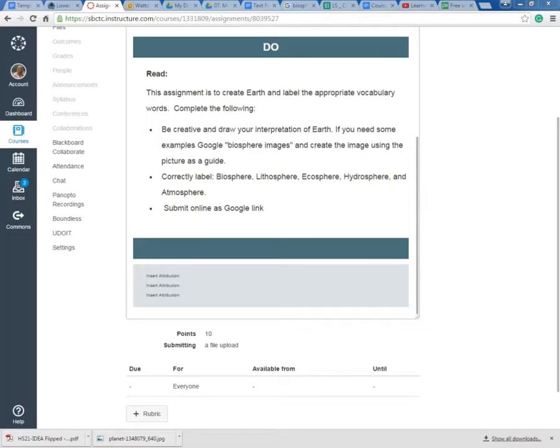I don't know about you, but sometimes when I'm asked to be creative, I need some ideas. I was looking at this assignment, and it says to create Earth and label the appropriate vocabulary words as a biosphere.